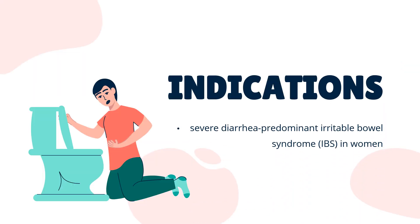What is alosetron used for? Only for the treatment of symptoms of severe diarrhea-predominant irritable bowel syndrome (IBS) in women with chronic symptoms, generally lasting greater than 6 months, who do not present with anatomic or biochemical GI abnormalities and have not responded to conventional therapy.